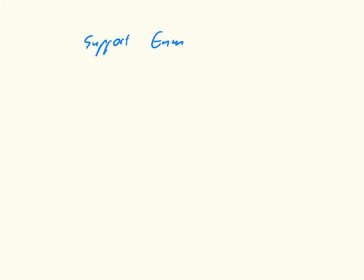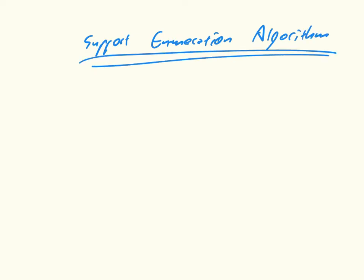What we're going to see now is our first algorithm for finding equilibrium. This algorithm is called the support enumeration algorithm. Essentially what we're going to do is go through all possible supports of mixed strategies and, using the best response condition, simply find the Nash equilibria by solving a linear equation and checking a couple of things.